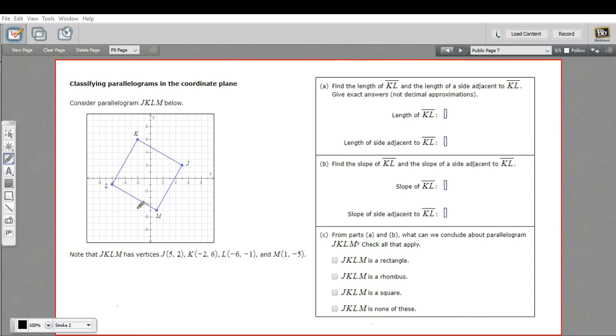In this problem, we have some kind of quadrilateral that has been plotted on the coordinate plane. We're even given the vertices of the points here. I'm going to take a minute to jot these in because I know we're going to use them.